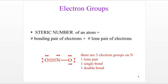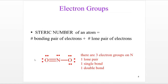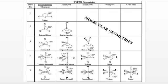We can represent electron groups by the steric number — a number one through six representing the number of limbs off the central atom. There are four types of limbs: a lone pair, a single bond, a double bond, and a triple bond. Each counts as one limb. For example, on a nitrogen with a lone pair, a single bond, and a double bond, that's three limbs, so the steric number is three. Based on the steric number, we can determine both electron and molecular geometries.